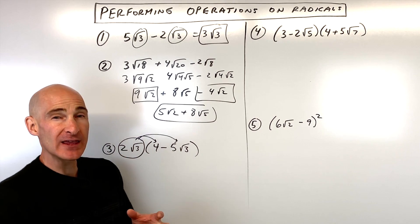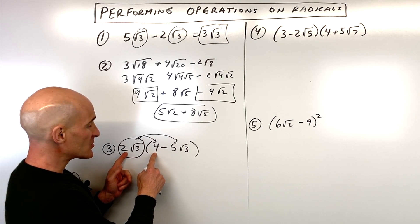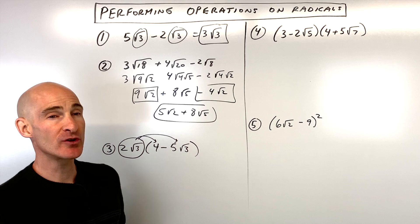Keep in mind, when you're multiplying, you want to multiply like terms together. What I mean by that is that the numbers that are on the outside of the square root, you're going to multiply by one another. And the ones that are on the inside of the square root, you're going to multiply those together.